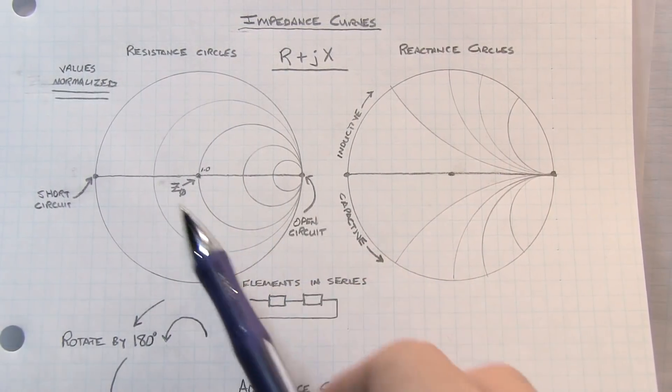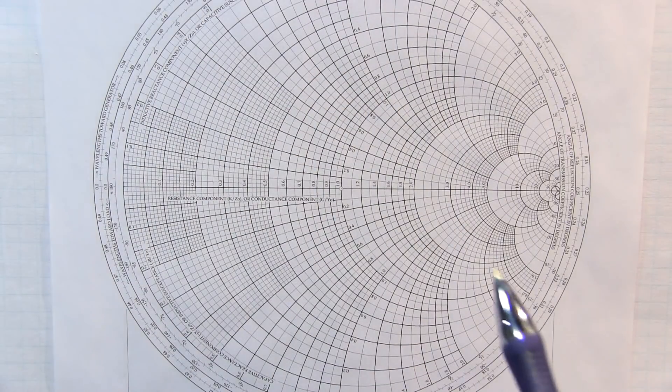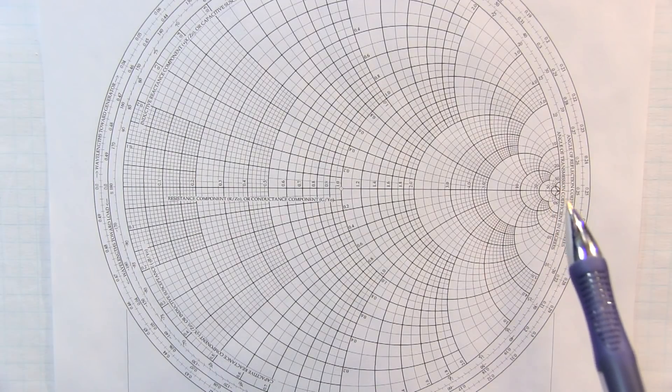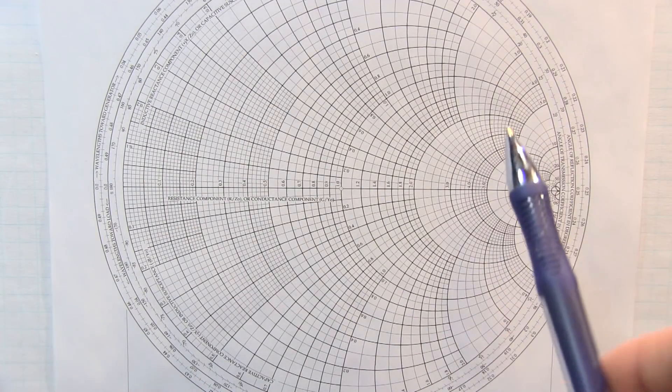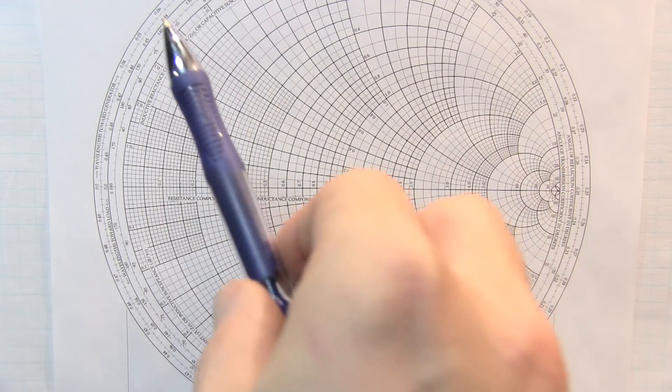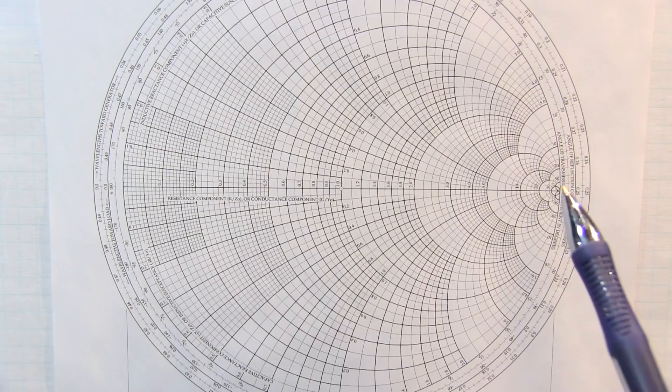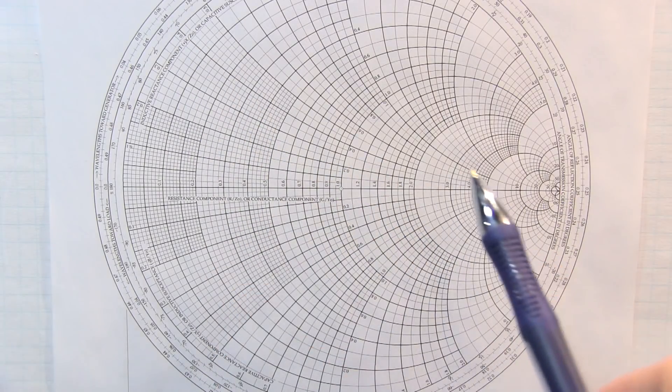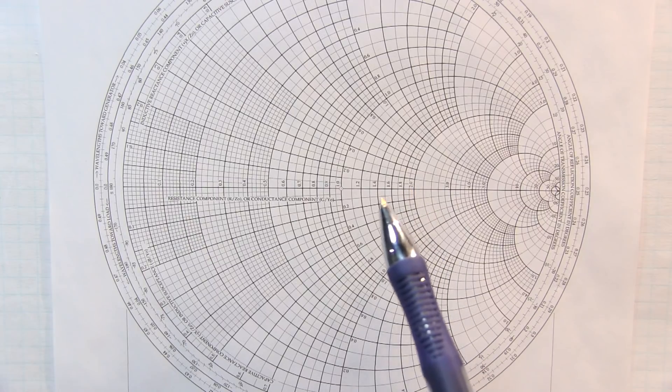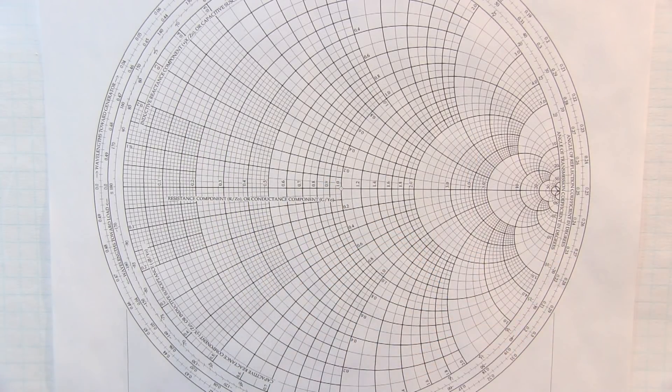Now that we know what these circles and arcs represent, if we actually look at the Smith chart, you can actually now see them. You can see the circles here that are all tangent to the open circuit all represent values of R. And then all of these arcs that are leaving or terminate at the open circuit point are the inductive reactance and capacitive reactance circles. So we can represent any value of R plus jX by any point within the Smith chart.